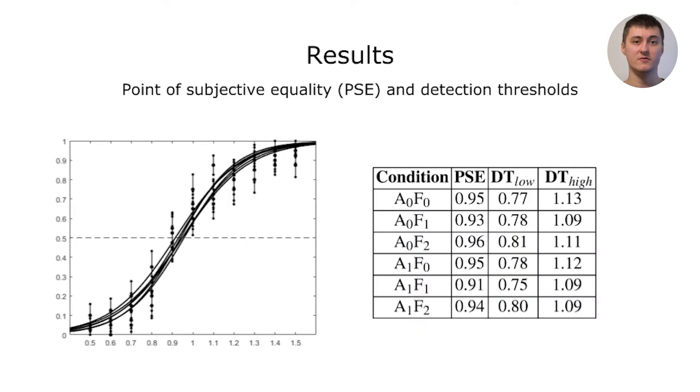To the left are the results from all conditions pooled, represented as psychometric functions, and to the right the raw results.